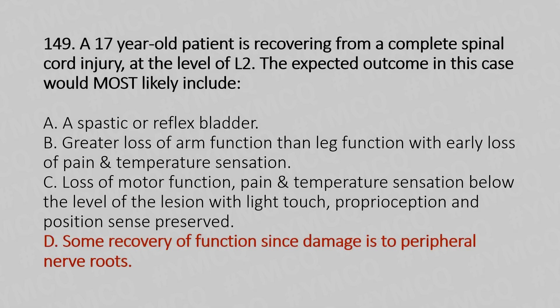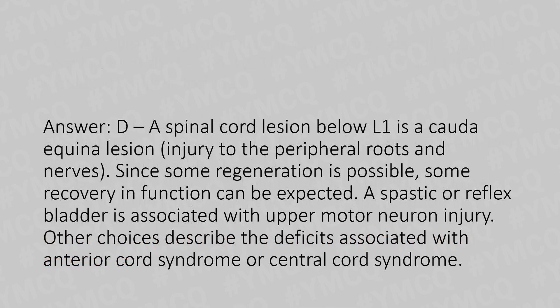The answer is Option B, some recovery of function since damage is to the peripheral nerve roots. Explanation: A spinal cord lesion below L1 is a cauda equina lesion, which is an injury to the peripheral roots. Since some regeneration is possible, some recovery in function can be expected. A spastic or reflex pattern is associated with upper motor neuron injury. The other choices describe deficits associated with anterior cord syndrome or central cord syndrome.